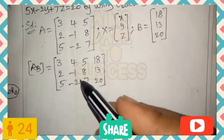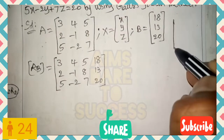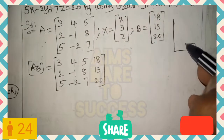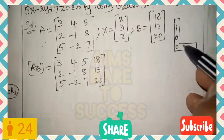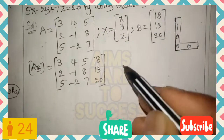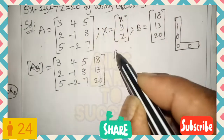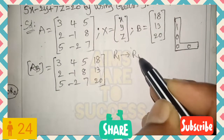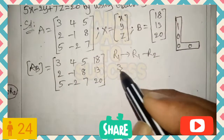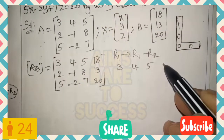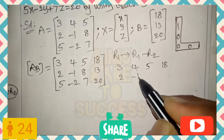Remember this important logic — without it you can't easily apply the Gauss-Jordan method. Using the L-symbol pattern, we need to get 1, 0, 0 in the first column. The first row's first element is not 1, so we use either row 2 or row 3. We apply R1 minus R2 because 3 minus 2 equals 1.